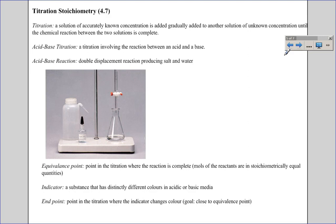An acid-base titration is a specific type where we're dealing with the reaction between an acid and a base. We might have a known solution of acid and react it with an unknown solution of base to identify its concentration. Specifically, an acid-base reaction is a double displacement reaction — you know how to recognize an acid and a base, and they're both ionic compounds — so it's a double displacement reaction that produces salt and water.